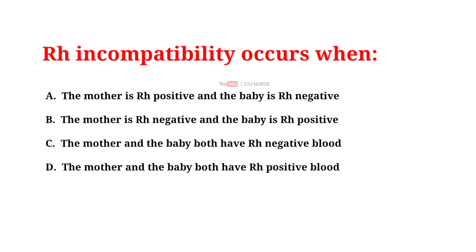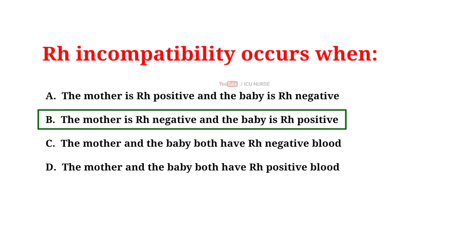Rh incompatibility occurs when: A. The mother is Rh positive and the baby is Rh negative. B. The mother is Rh negative and the baby is Rh positive. C. The mother and the baby both have Rh negative blood. D. The mother and the baby both have Rh positive blood. And the correct answer is B: the mother is Rh negative and the baby is Rh positive.